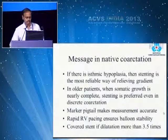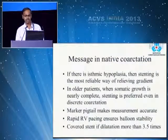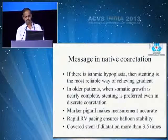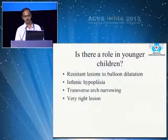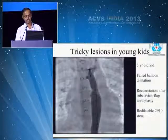The message in native coarctation: if there is isthmic hypoplasia, stenting is the most reliable way of relieving the gradient. In older patients where somatic growth is nearly complete, stenting is preferred even in discrete coarctations. We use a marker pigtail, rapid RV pacing, and a covered stent if the dilatation is more than three and a half times. There is also a role in younger children if the lesion is very resistant to balloon dilatation, if there is isthmic hypoplasia, or if the transverse arch needs dilatation.